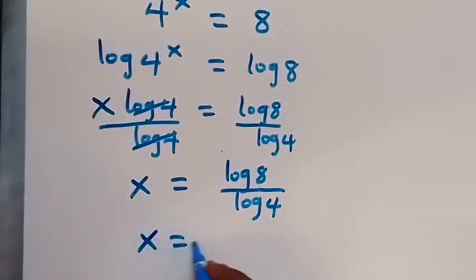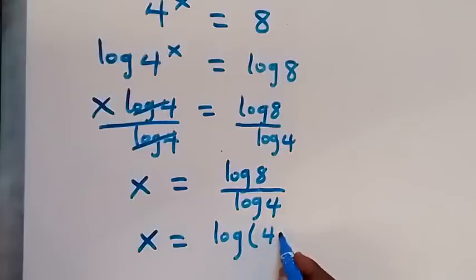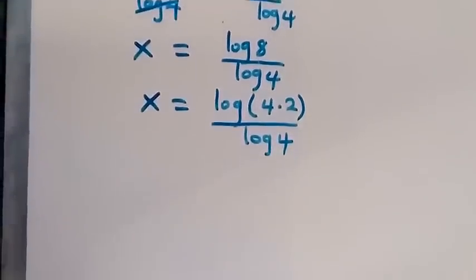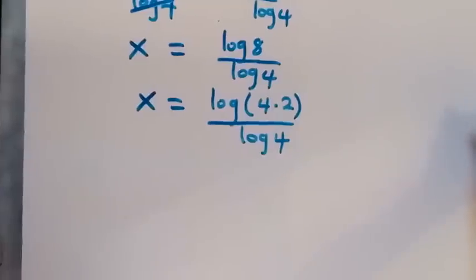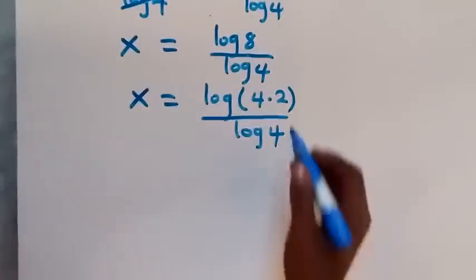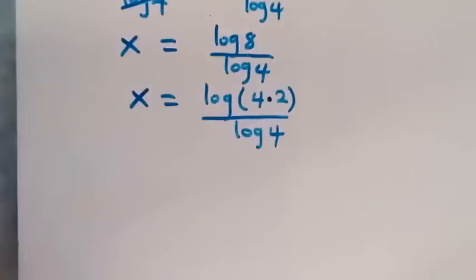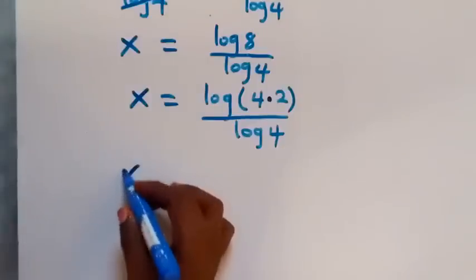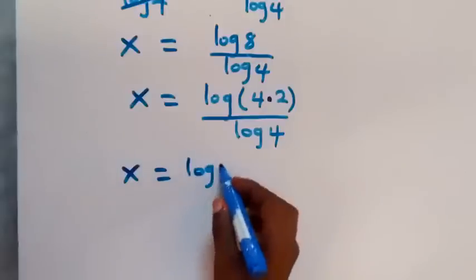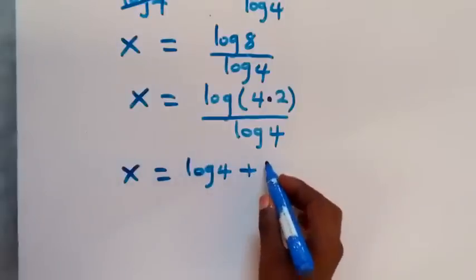Let's write 8 in another way as 4 times 2. So x equals log(4 times 2) divided by log 4. Using the log product rule, the numerator becomes log 4 plus log 2, giving x equals (log 4 plus log 2) over log 4.